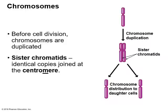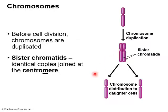Before mitosis can take place, DNA has to be duplicated. All chromosomes go through a duplication process — you start with one chromosome, make another copy, and these copies are called sister chromatids. Sister chromatids are two identical chromosomes bound to each other in the middle by a centromere. The letter M in centromere helps you remember that it holds two sister chromatids together in the middle.